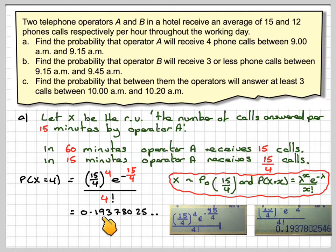We get 0.1937825, which gives 0.194 to 3 significant figures.